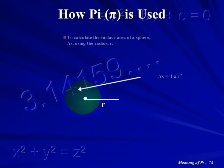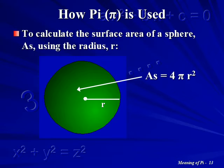To calculate the surface area of a circle, A, using the radius, R, multiply 4 times Pi times the radius squared.